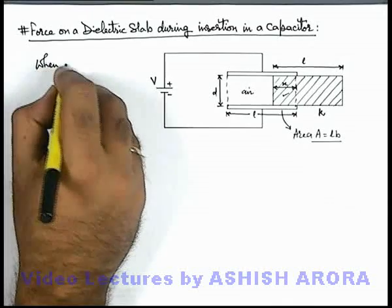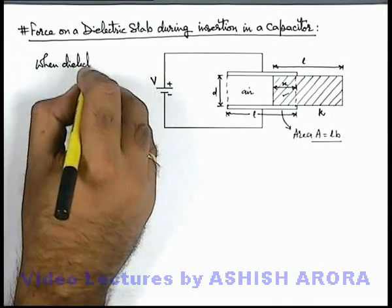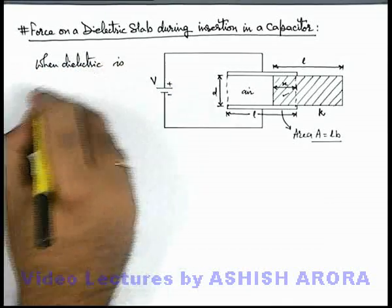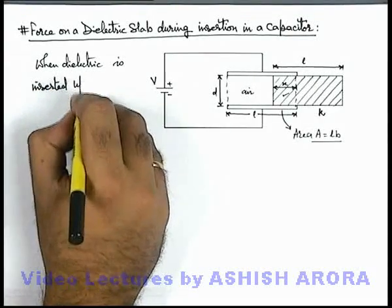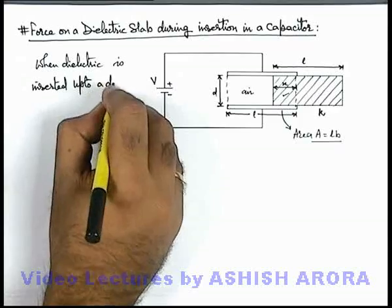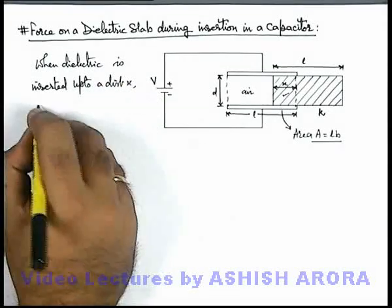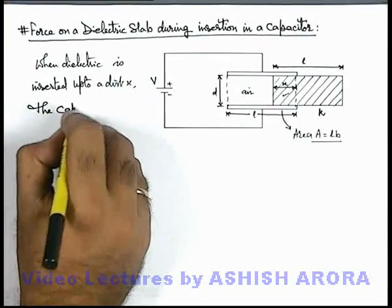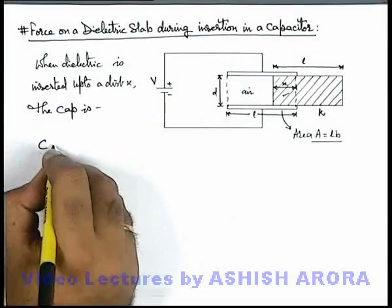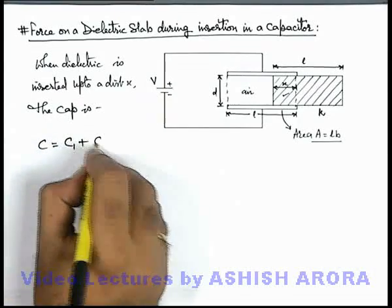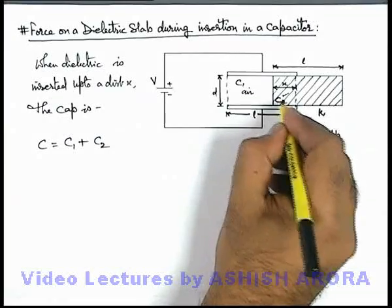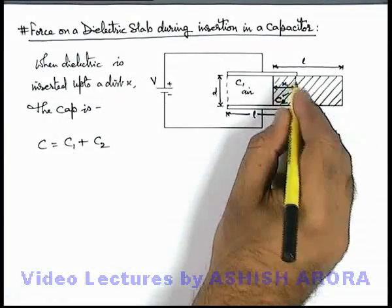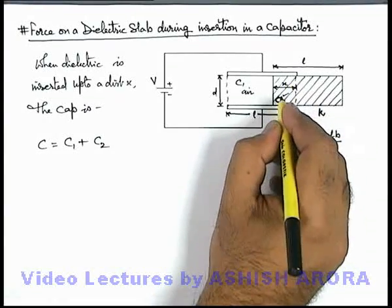So in this situation we can write: when dielectric is inserted up to a distance x, the capacitance is, the capacitance we can write as C1 plus C2, where C1 is the capacitance of the air capacitor and C2 is the capacitance of the region in which the dielectric is already inserted.